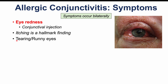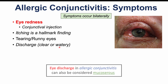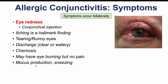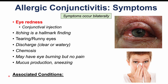Allergic conjunctivitis also presents with tearing and runny eyes, and the discharge is clear or watery. Patients may also have chemosis — swelling or edema of the conjunctiva itself. There may be some eye burning from rubbing or itching, but there is no pain. Associated symptoms include mucus production and sneezing. The conditions associated with allergic conjunctivitis include allergic rhinitis (hay fever), asthma, and atopic dermatitis — the atopic triad.